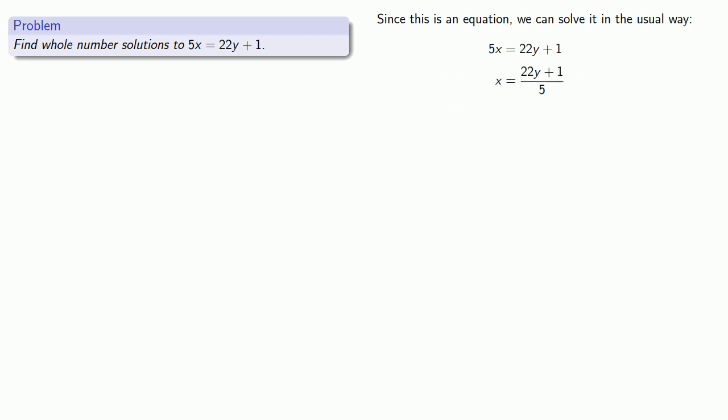Now remember, our goal is to find whole number solutions to this equation. And because we're dividing, we know that sometimes division produces non-whole number solutions. But sometimes it does produce whole numbers, and that's when the dividend is a multiple of the divisor. So let's split the rational expression into parts that are divisible by 5 and leftovers.